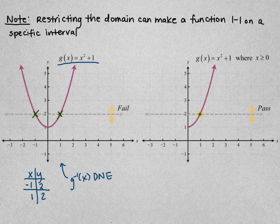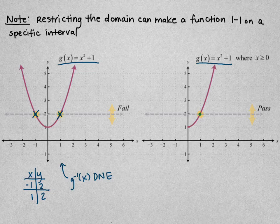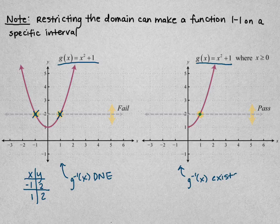Now let's look at the right-hand graph — still g(x) = x² + 1, but we've restricted the domain to only positive x values. When we restrict the domain, we get a one-to-one function. So g inverse of x exists when we restrict the domain of g(x) from zero to infinity.